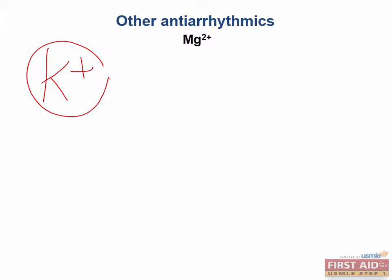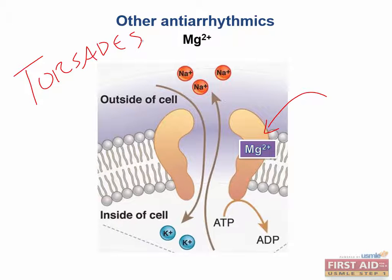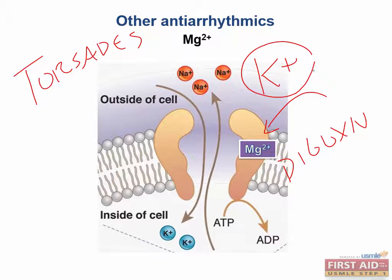Magnesium is key in controlling the elimination of potassium in the urine and acts as a cofactor for the sodium-potassium ATPase pump. Magnesium is particularly useful in situations where abnormal potassium concentrations trigger an arrhythmia — specifically torsades de pointes. It is also useful as a sodium-potassium pump inducer to restore intracellular and extracellular ion concentrations, making magnesium excellent for reversing digoxin toxicity, because it will induce the activity of the pump that digoxin inhibits. Digoxin binds at the extracellular potassium binding site and inhibits this pump from working.